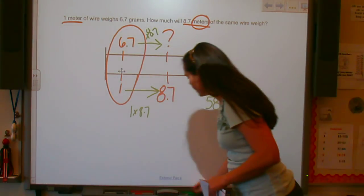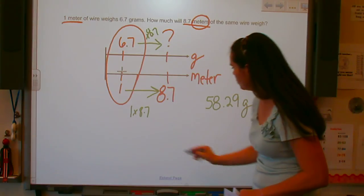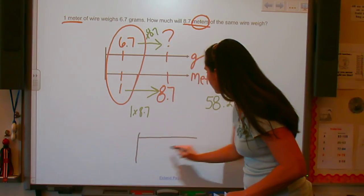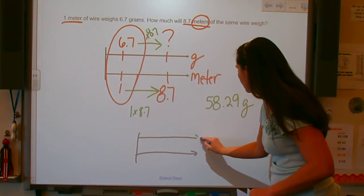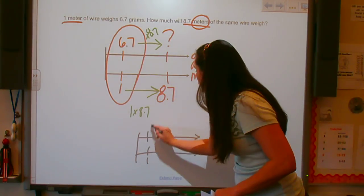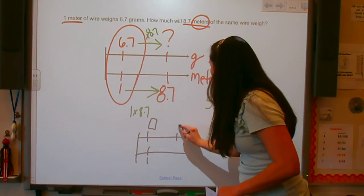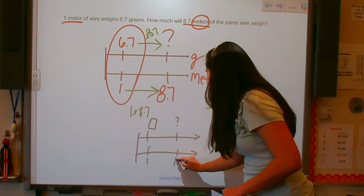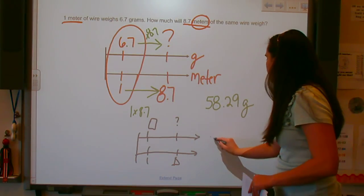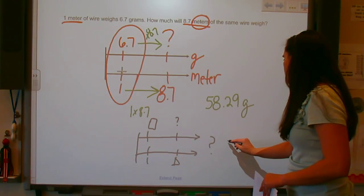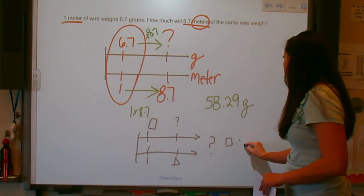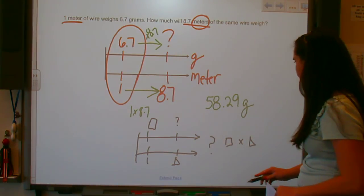And again, just looking at this with just symbols, we had our one with some information. We had a question mark. And then to find the question mark, it was the box times the triangle.